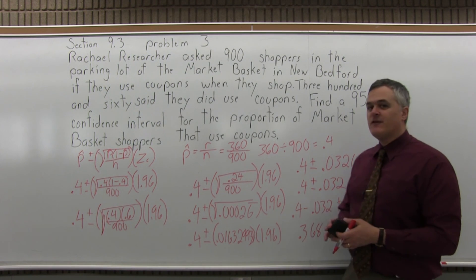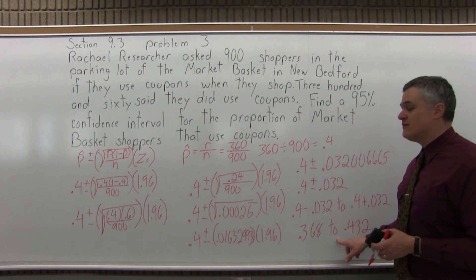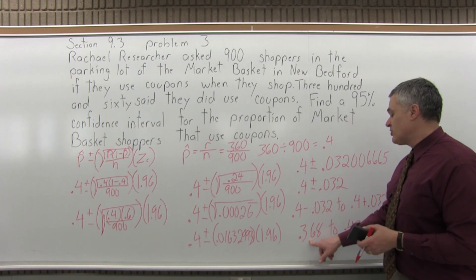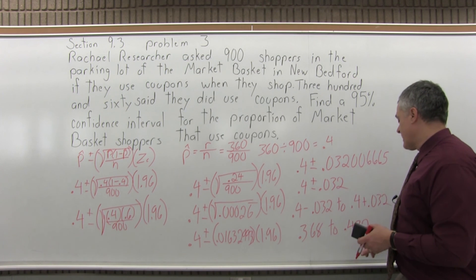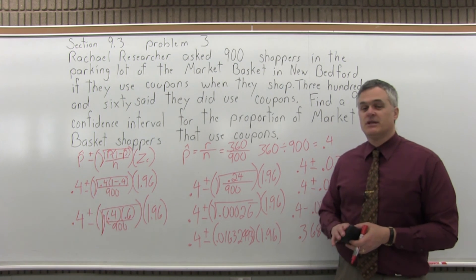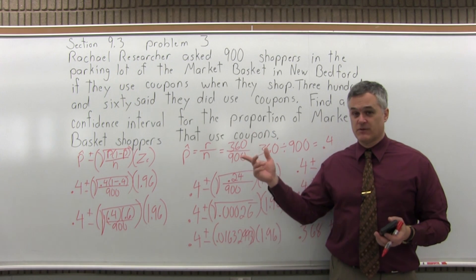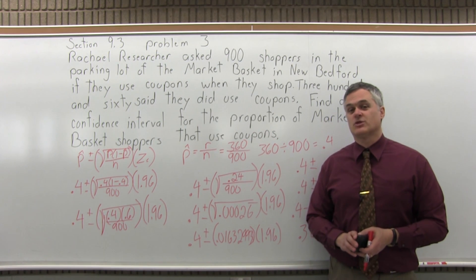So I'm 95% sure that this is an interval that the true population proportion is in. Somewhere between about 37% with some round off and 43%. That's the proportion of shoppers at that store, Market Basket New Bedford, that I expect would use coupons when they show up.